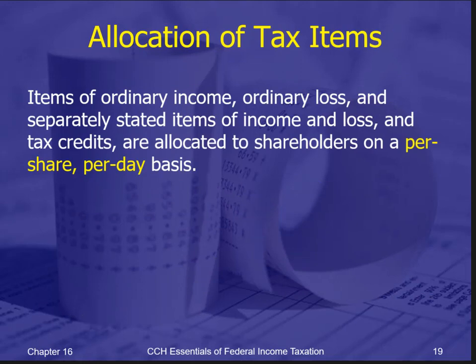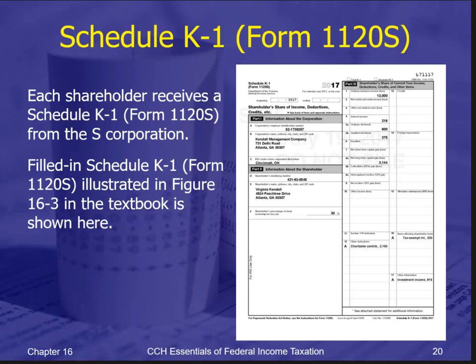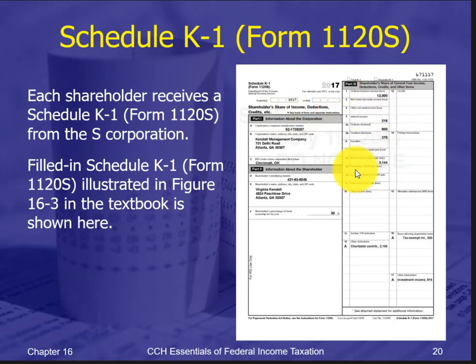Ordinary income and ordinary loss are allocated to shareholders on a per share, per day basis — meaning every day you own that stock during the tax year, multiplied by the percentage of ownership you hold. This is reported to you as a shareholder on a K-1. Note that the K-1 form is used for both 1120S and 1065, so check the corner to see which type it is: 1120S K-1 is for shareholders of an S-Corporation, while a 1065 K-1 is for partners in a partnership.